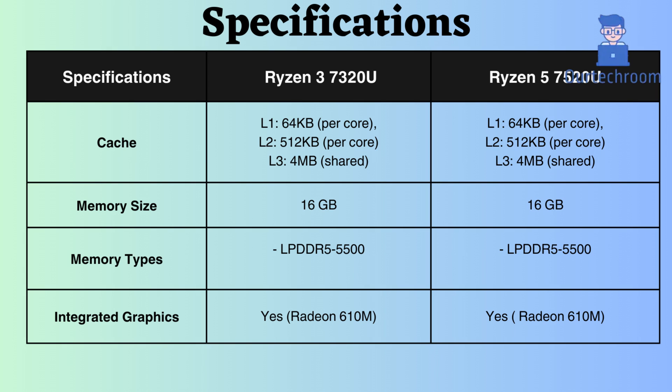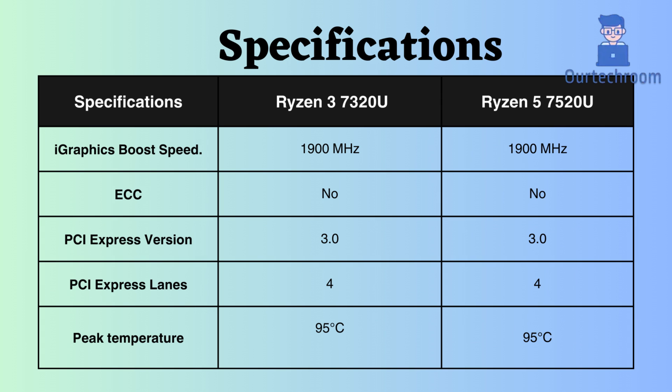Both processors support up to 16 GB of RAM and also accommodate LPDDR5 RAM with a frequency of 5,500 MHz. They both feature integrated Radeon 610M graphics with a boost frequency of 1,900 MHz, suggesting that their performance in light gaming and video playback should be very similar. Neither of them supports ECC, making them unsuitable for critical systems such as servers and workstations.